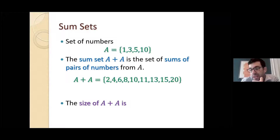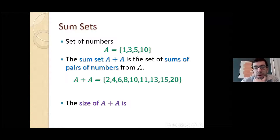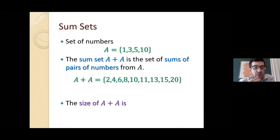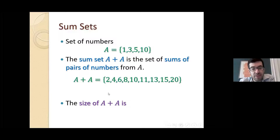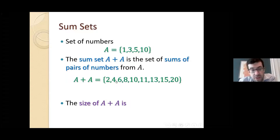We don't really care about what numbers exactly are in the sum set — we care how many different sums there are. Notice that 1+5=6 and 3+3=6 as well; it's the same thing, and we only include 6 once. So the size of the sum set captures how many sums are distinct. If there are a lot of repetitions, it will be small; if there are many different sums, it will be large. In this case, there are nine numbers in the sum set, so the size is nine.